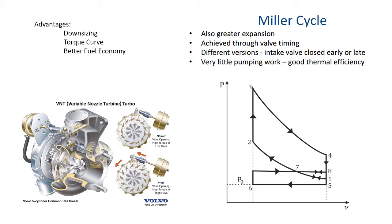When the exhaust comes up from the expansion, the energy is recaptured by the turbine, which in turn turns the compressor. The compressor drives the air in. So in a turbocharged car, we always have the air to deliver power as long as there is fuel in the fuel tank.